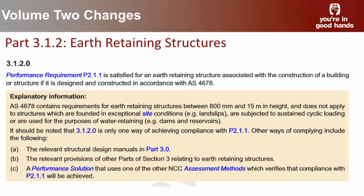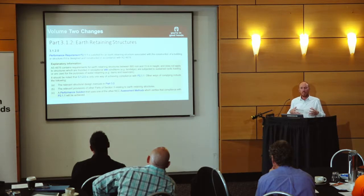There's also a new part for earth retaining structures. This has been an area of the code that's been silent for a number of years. You could always use your AS 1170 first principles engineering standards, AS 1720 for timber structures, or AS 3600 for concrete structures. A new part has been incorporated that applies in conjunction with those, incorporating AS 4678, which deals with earth retaining structures. It's a first principles engineering standard, so it's not a deemed-to-satisfy type like AS 1684, but it gives engineers an option for designing retaining walls.